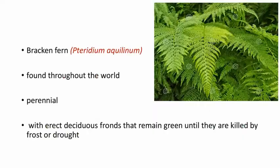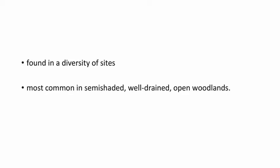Bracken Fern, the scientific name is Pteridium aquilinum. This is the picture of the Bracken Fern plant. This plant is found throughout the world. It is a perennial with erect deciduous fronds that remain green until they are killed by frost or drought. Bracken Fern is found in a diversity of sites, but most commonly seen in semi-shaded, well-drained and open woodlands.